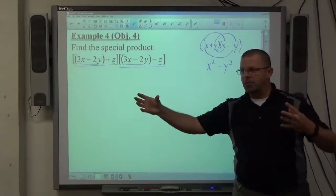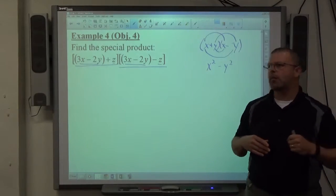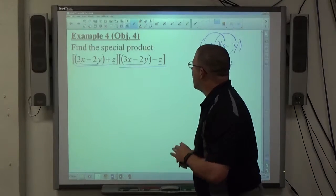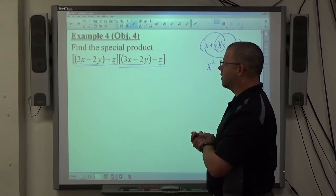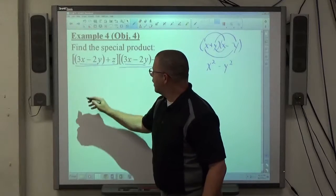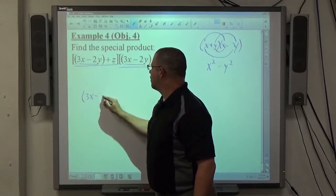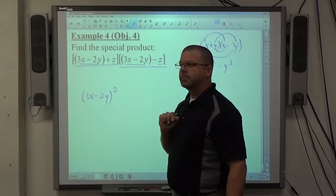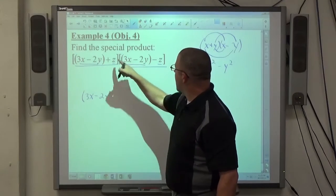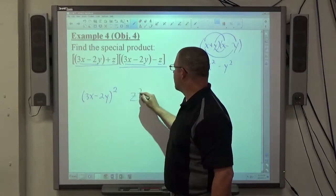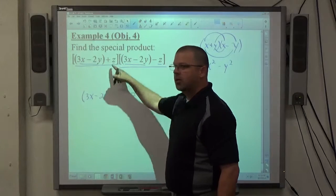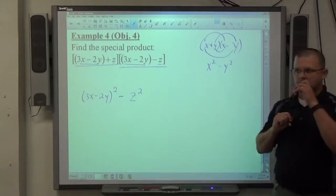So it's the same idea, object plus object, same object minus same object. So if we apply the difference of squares idea to this, the first object is 3x minus 2y. We're supposed to square that, right? The second object is z. We're supposed to square that and make that one negative because we have the opposite signs on it.